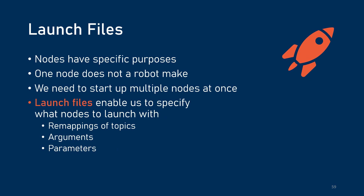We've got nodes and parameters, and we've got to run a bunch of nodes to get our robot up and running. That's what launch files are for. Nodes have specific purposes and you need multiple nodes to make a robot, so when we want to start up multiple nodes, we use a launch file to specify what nodes you want to launch at the same time. Launch files can also load in parameters and arguments so you can configure the nodes at launch.